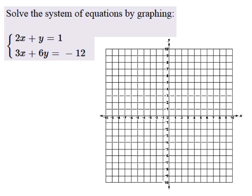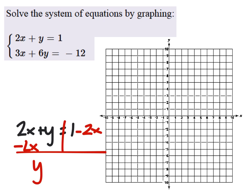Alright, so this first equation, we've got 2x plus y equals 1. We like to see these in slope-intercept form. So if we subtract, let's write that out. So 2x plus y equals 1. If I subtract 2x from both sides, then I get y equals negative 2x plus 1.